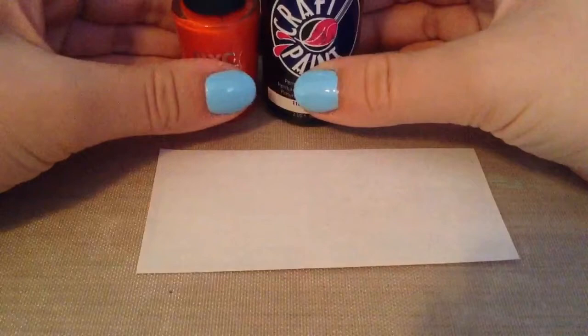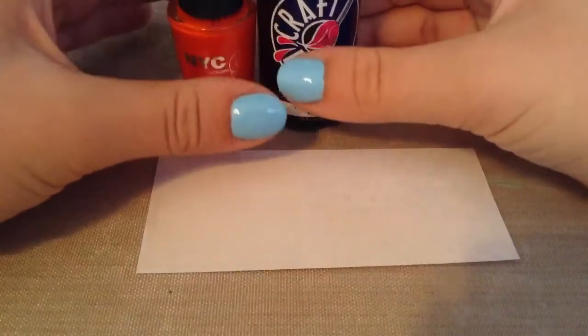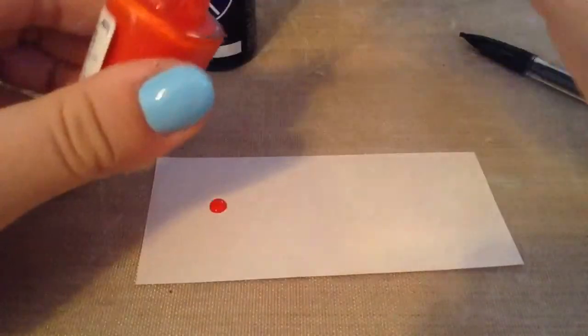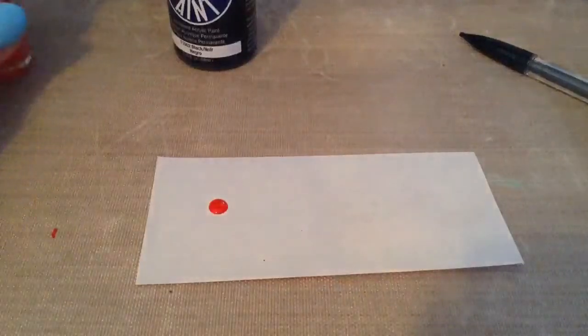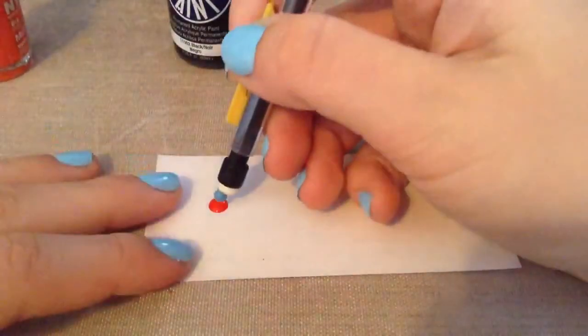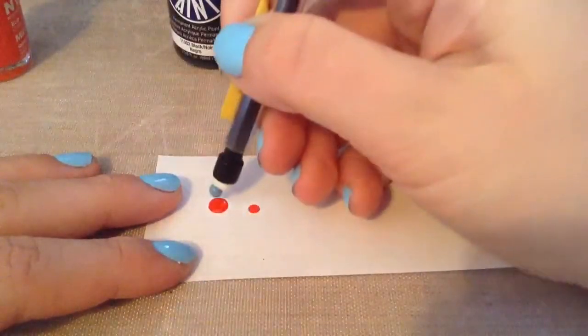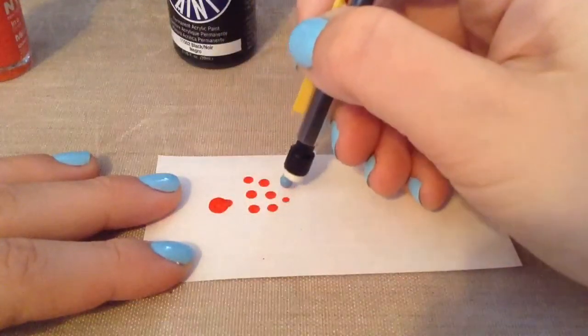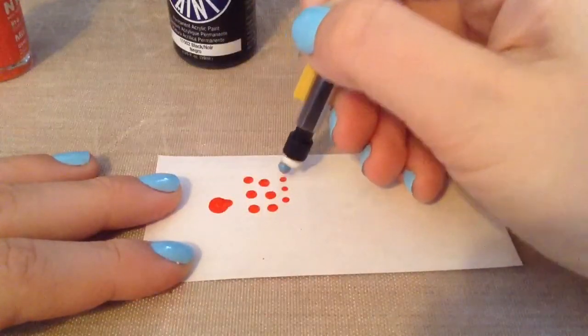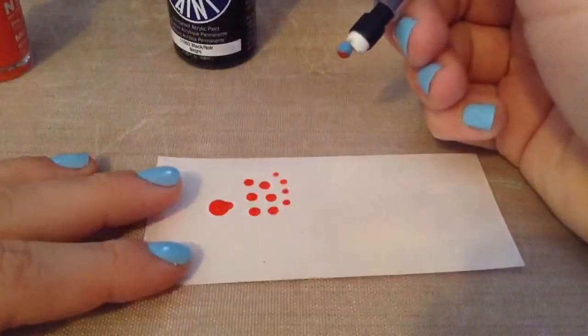Now we're using our dotting tool to create circles with nail polish and acrylic paint, both of which have similar textures but are usually used for different things. I'm going to start off with my nail polish. As you can see, the dotting tool creates very uniform dots, and if you put less paint on the tool, you can create smaller dots as shown here.